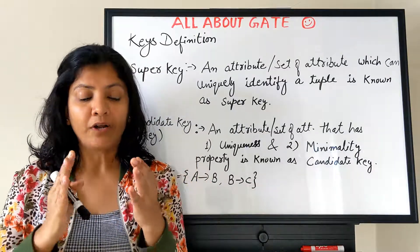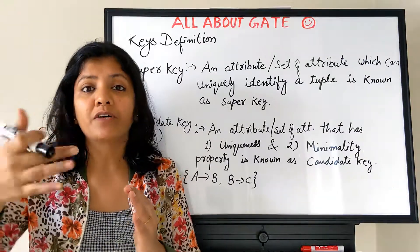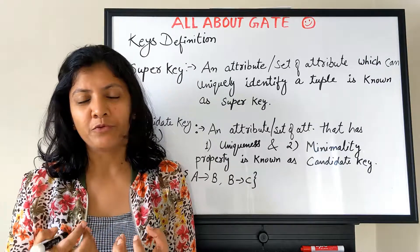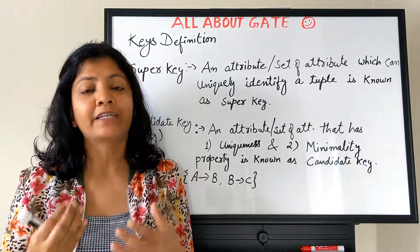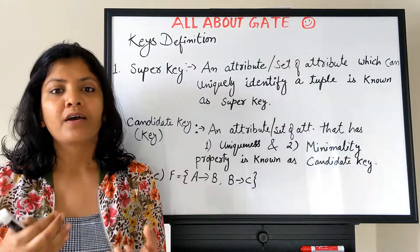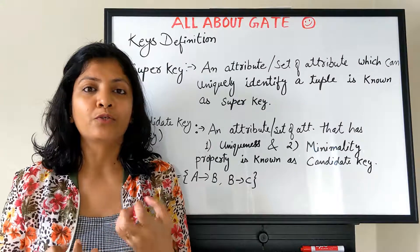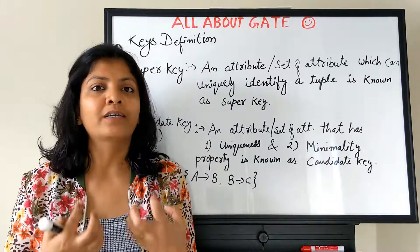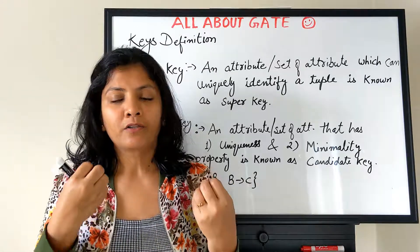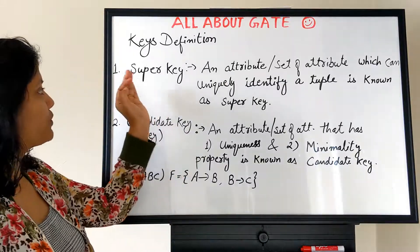The closure of an attribute tells you what all attributes can be functionally determined by it — it shows the power of an attribute as defined by the database designer in terms of functional dependency. That power of an attribute will now be utilized and turned into various types of keys. Let's begin the definitions of keys one by one.